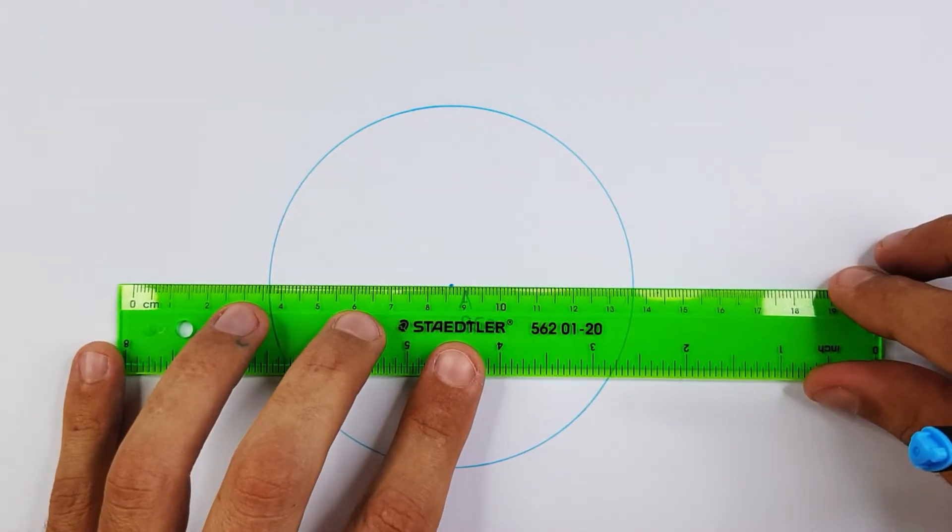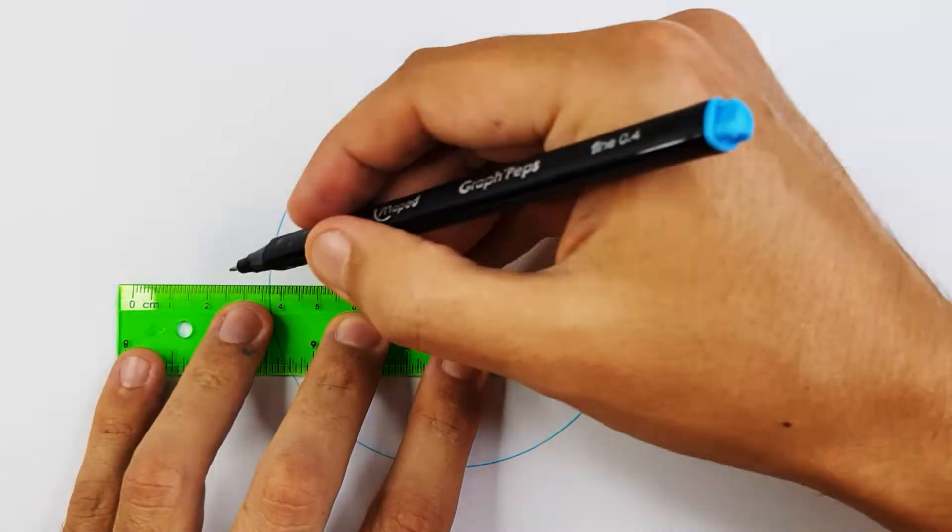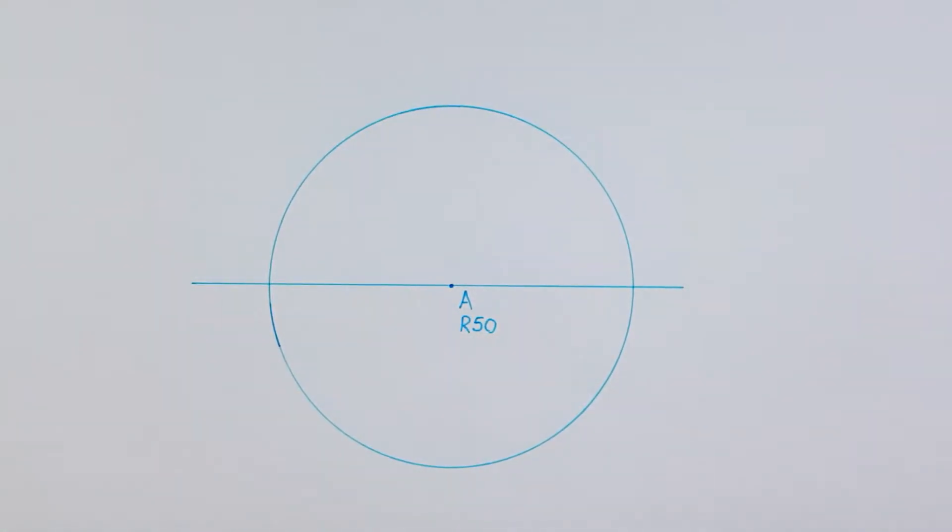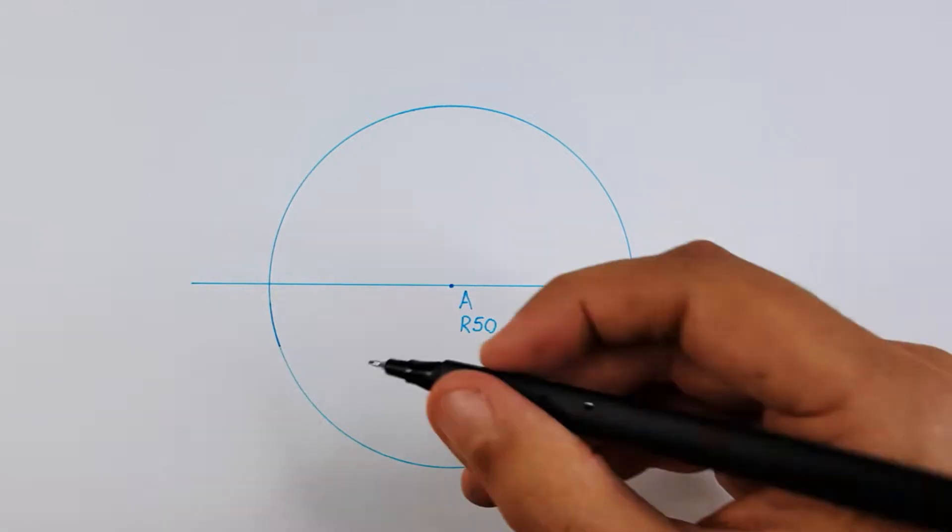Draw a horizontal line through point A so that it sections your circle. Label the sectioning points as B and C.